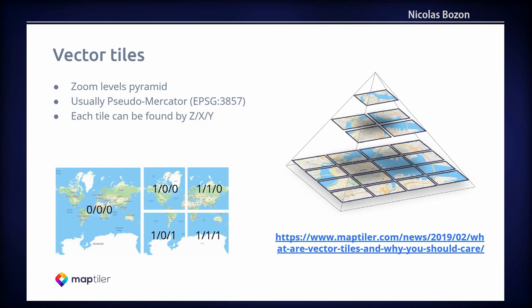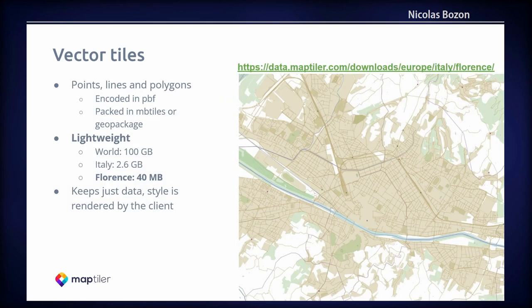So far this is pretty much similar to raster tiles. The real difference is that vector geometry — points, lines, or polygons — are contained in the vector tiles. The tiles keep just data, not style. It is also very lightweight. Unlike raster tiles that return PNG, JPEG, or WebP images, vector tiles are served as binary PBF files, which are very small.